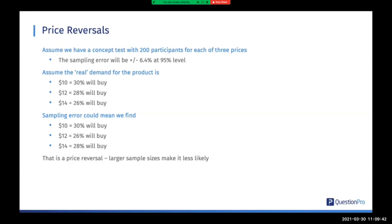Imagine we know the real demand: at $10, 30% will buy; at $12, 28% will buy; at $14, 26% will buy. But doing our test with 200 people per cell, we might find that at $10, 30% will buy, and at $12, 26% will buy — well within sampling error. But at $14, we might measure 28%, which creates a price reversal: suggesting that increasing the price from $12 to $14 would increase sales. That does not normally happen. If we had a larger sample size, these price reversals are less likely, but they're one of the things we need to keep an eye on.